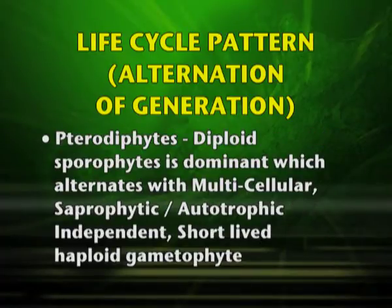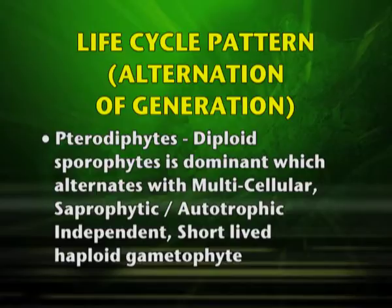In pteridophytes, the diploid sporophyte is dominant and alternates with a multicellular, autotrophic, independent, short-lived haploid gametophyte. The diplontic type of life cycle is found in gymnosperms and angiosperms, where the diploid sporophyte is dominant and the gametophyte is reduced to single to few cells. We have seen how plants — from algae, bryophytes, pteridophytes, gymnosperms and angiosperms — follow a definite life cycle pattern, the alternation of generation. In some we find the dominant gametophyte whereas in some we find the dominant sporophyte.